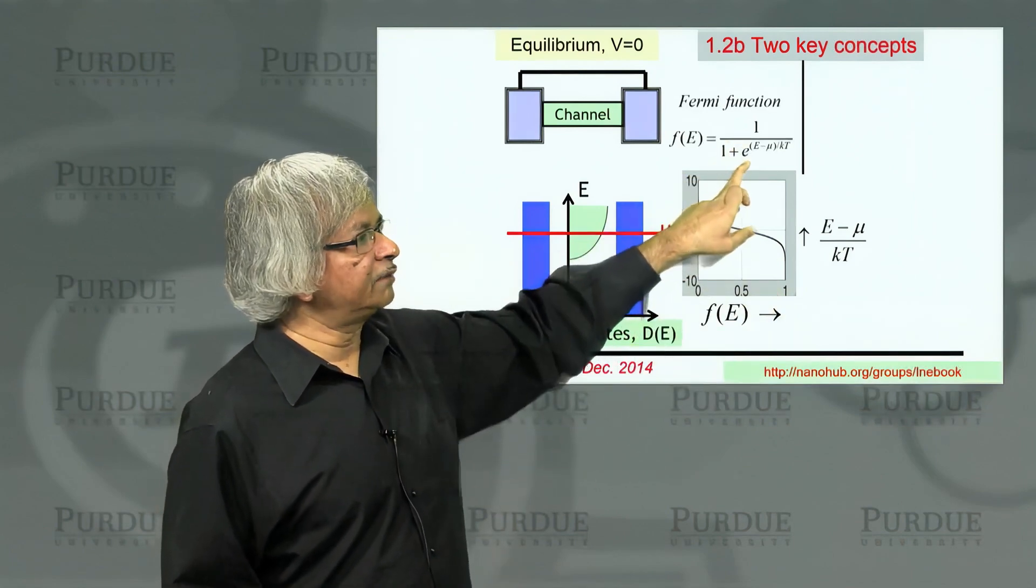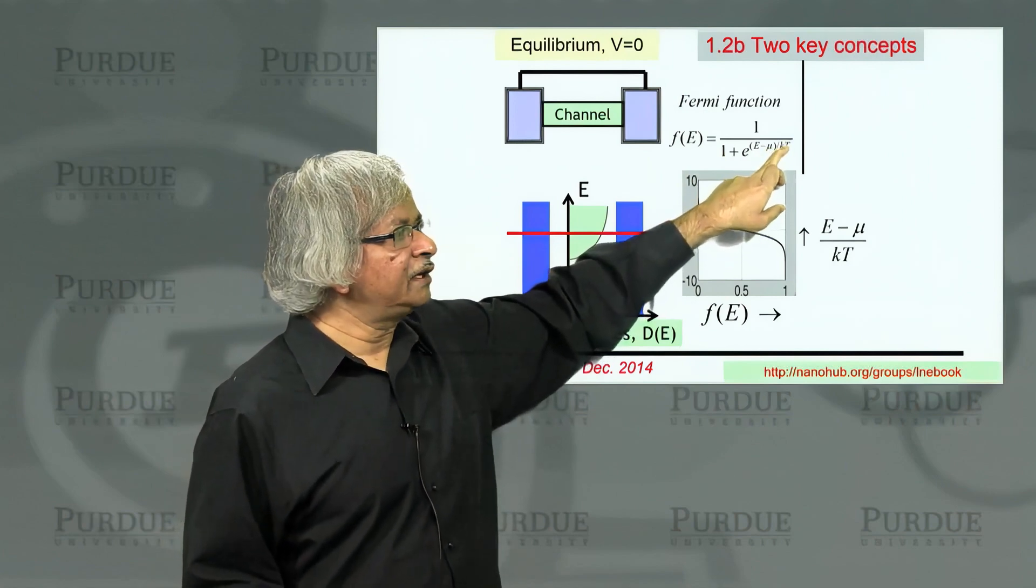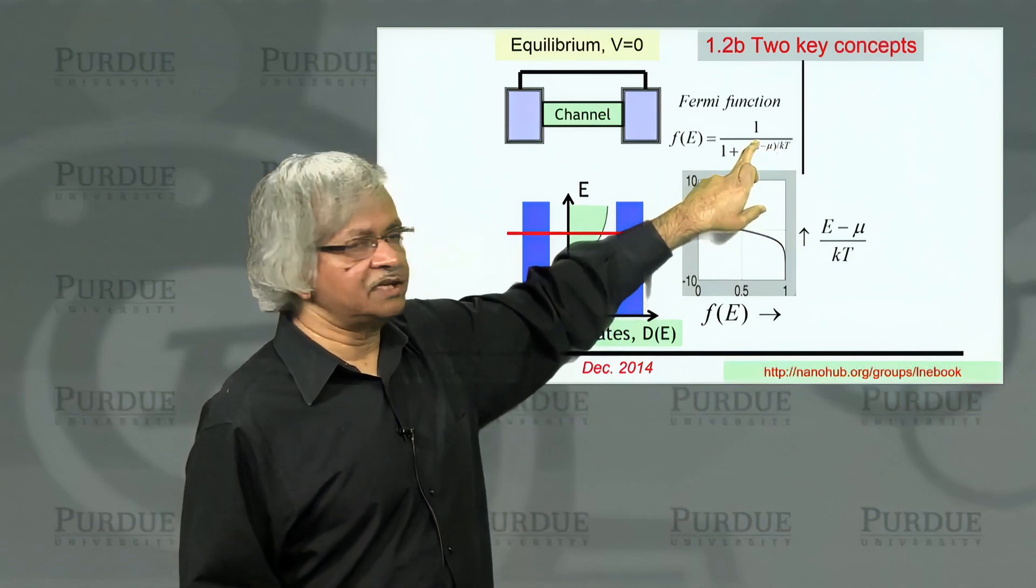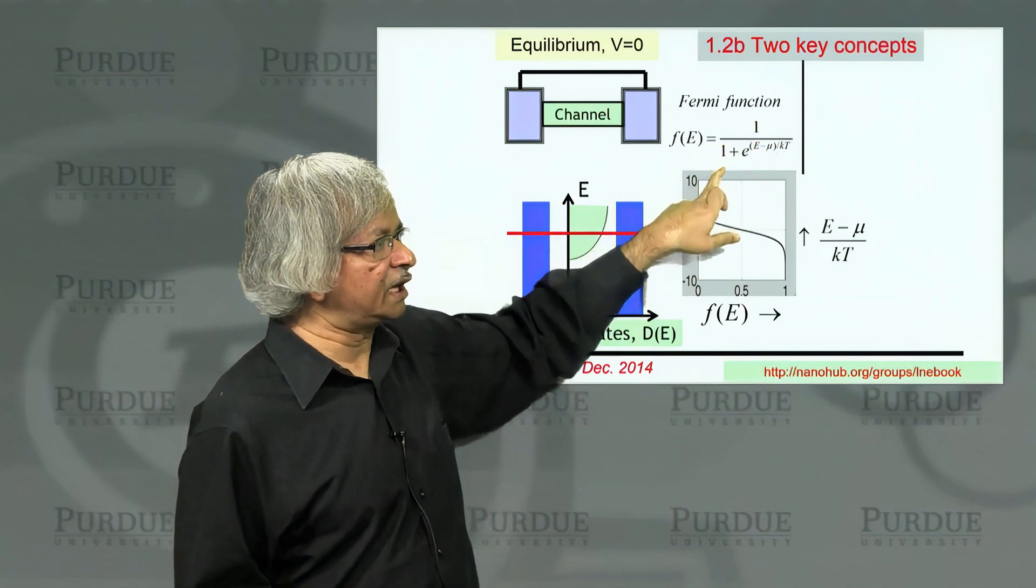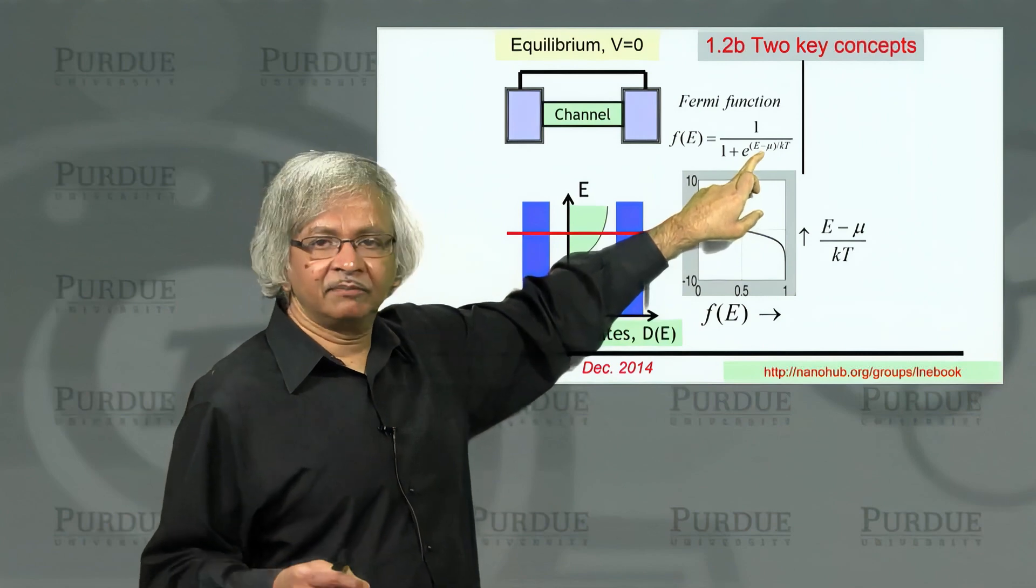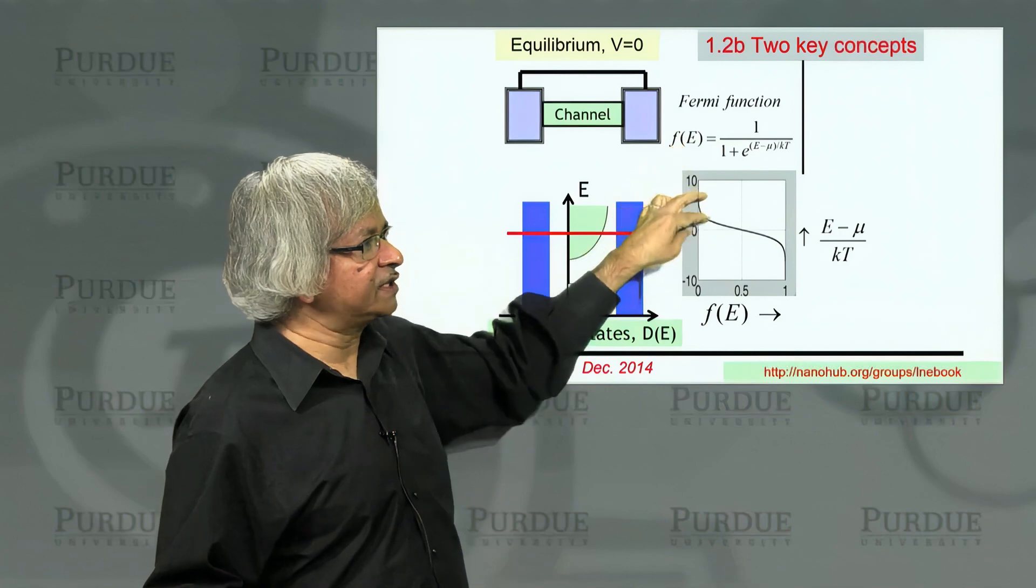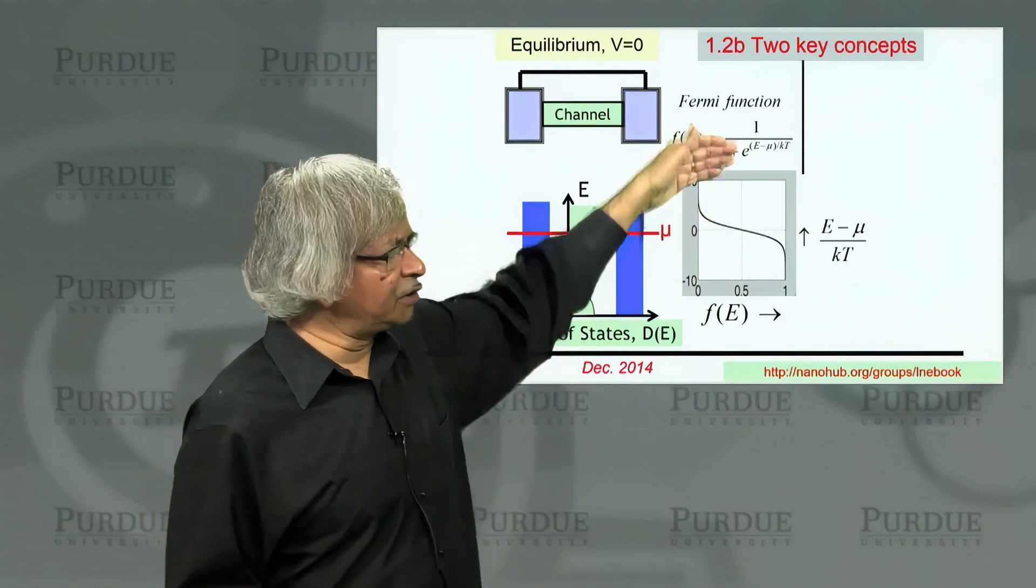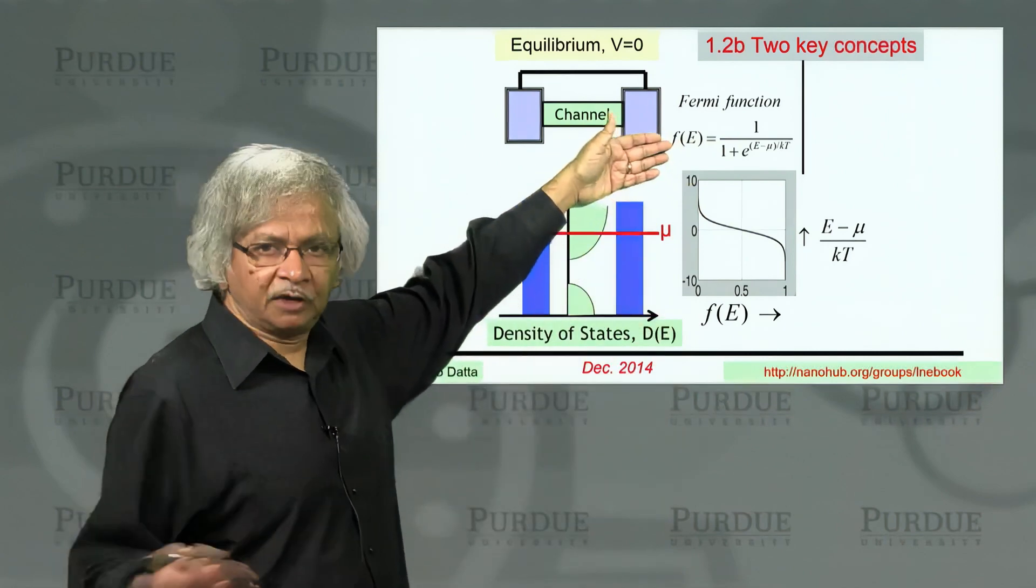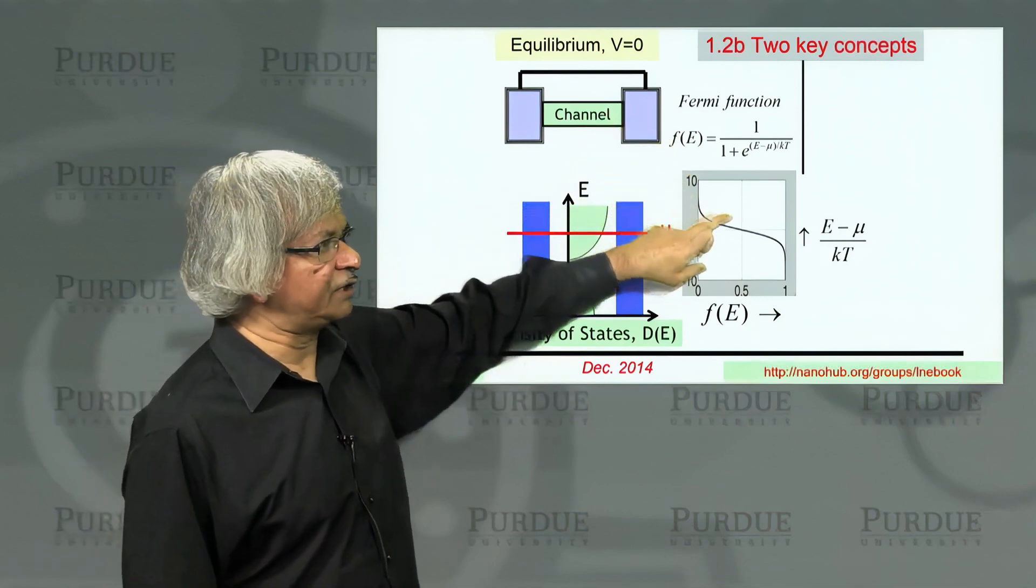The mathematical form of this function looks something like this. It is 1 divided by 1 plus exponential E minus mu over kT. When that quantity is negative, then it is exponential of a large negative number, which is 0, and so the function becomes 1. When that number is big, like exponential of a positive number, that's a very large number. And so 1 divided by a large number makes it a very small number. It goes to 0. You could take that function and plot it out. These days it's very easy to plot it out on MATLAB or Mathematica, and you can see how that function will look.